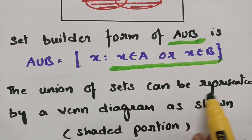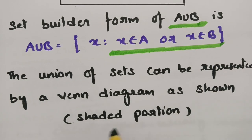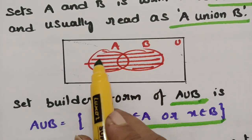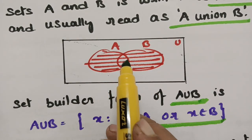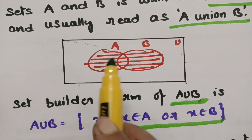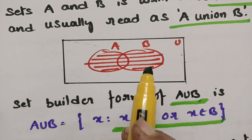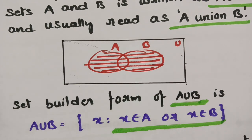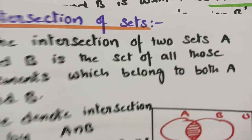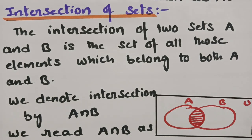The union of two sets can be represented by the Venn diagram as the shaded portion. So this whole shaded portion is called the union — it means the elements in A as well as B combined together. So joining of A and B is called the union of sets.